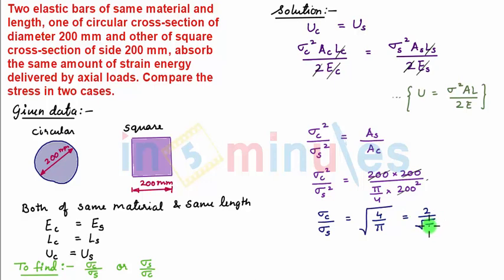So, we can write sigma_C by sigma_S is equal to 1.128. This is our final answer.